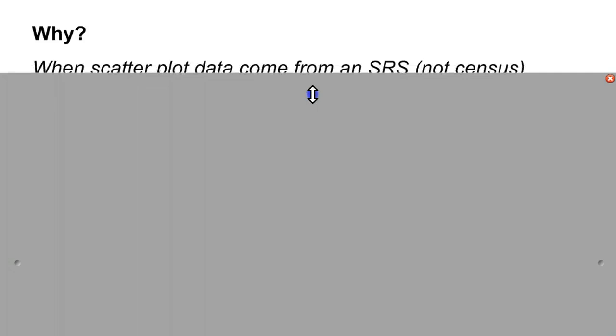Start out with the why. A couple things to think about. You would do this when scatterplot data comes from some sort of simple random sample, not a census. In the same way that you wouldn't do a confidence interval if you took a census when you asked people one question, you wouldn't do a confidence interval when you asked people two questions either if it was a census. You would only do it from a sample.